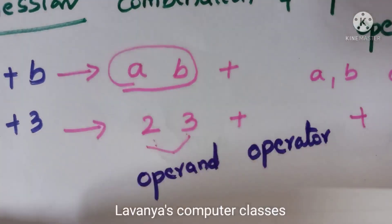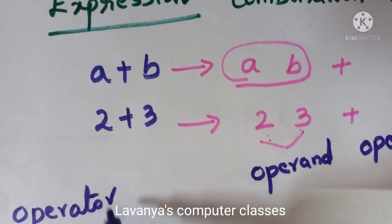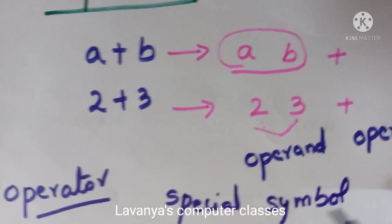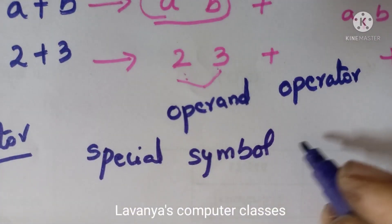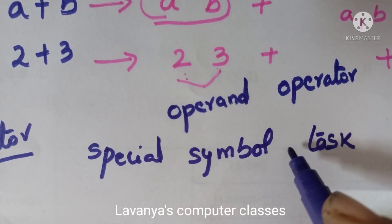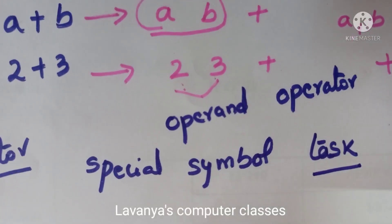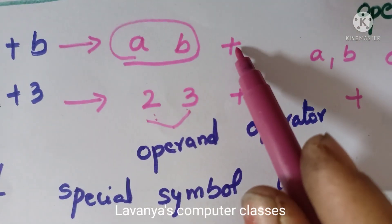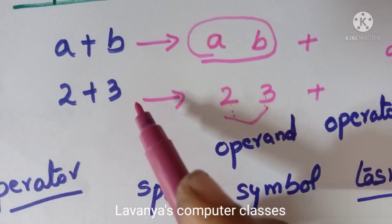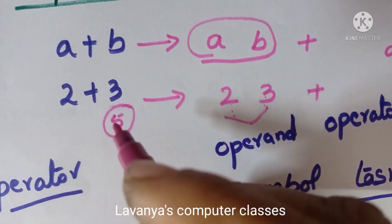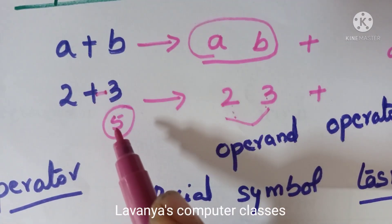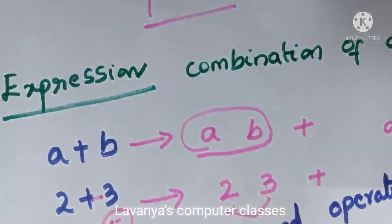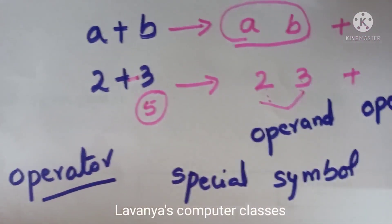That is the definition of an expression. Now, what is an operator? An operator is a special symbol used for performing some task. For example, in 2 plus 3, plus is the operator — it is a symbol used for performing addition of two numbers, and the result is 5.